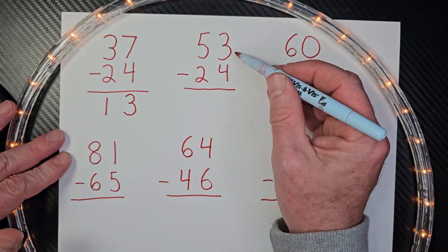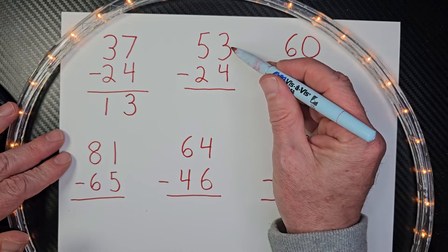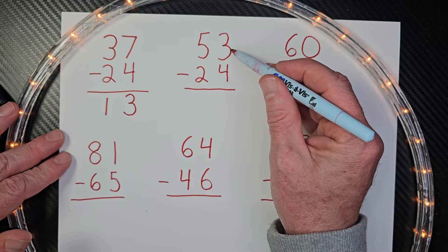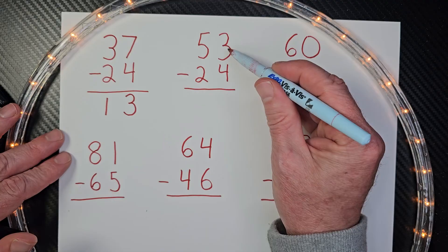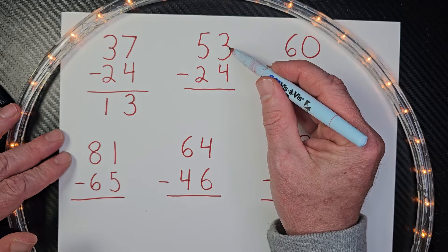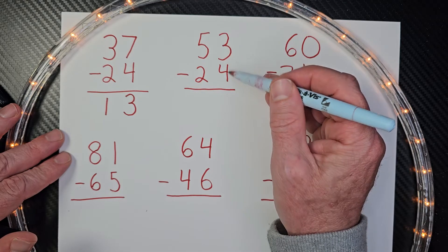All right. Let's go ahead and do this problem. Again, we want to subtract the ones. Take a look at this right here. It says three minus four. That's like you have three pieces of candy and I want four of them. You can't do it.